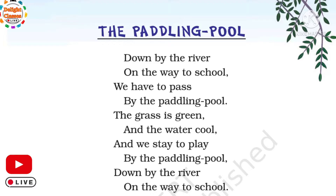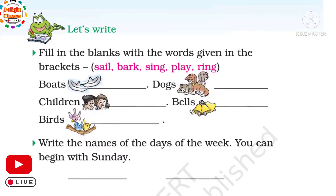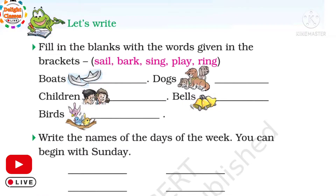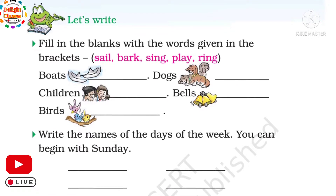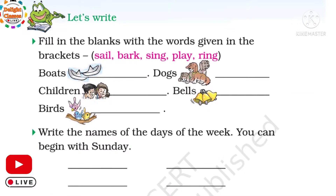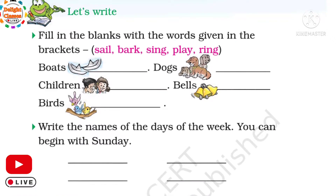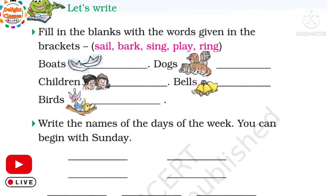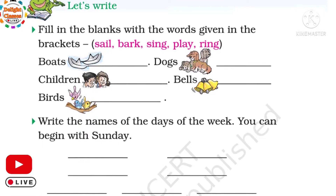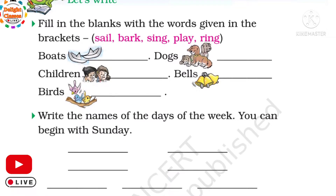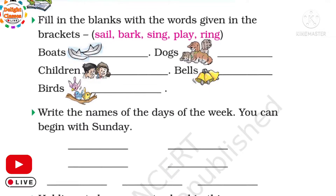Down by the river on the way to school. Now children, page number 13. Fill in the blanks with the words given in the brackets. Boats sail — s-a-i-l. Dogs bark — b-a-r-k. Children play, bells ring.